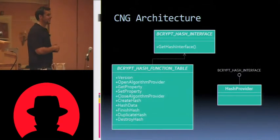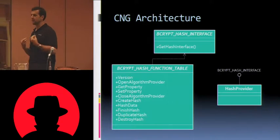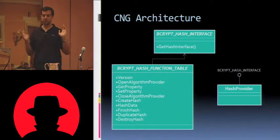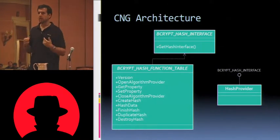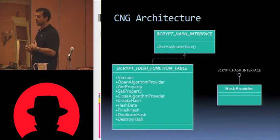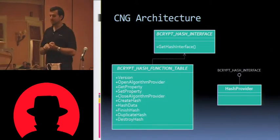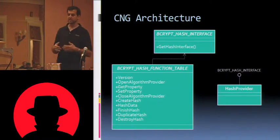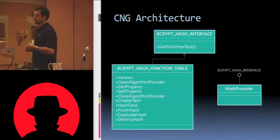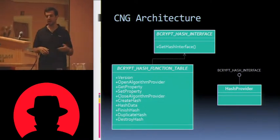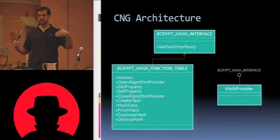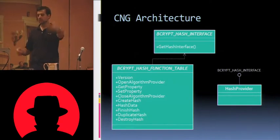The architecture of CNG is vastly different than the other two — it works on an interface-based basis. The top-level interface for hash is called bcrypt hash interface. If you want to write your own provider, just implement this interface. It has only one method, called get hash interface, which returns a bcrypt hash function table — essentially a big list of function pointers for all the other things a hash might want to do: create hash, hash data, finish hash, duplicate hash, destroy hash. You implement all of these in your provider and pass the function pointers back in the structure to the get hash interface call.